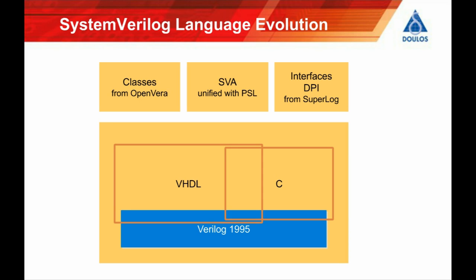It also incorporates classes taken from Openvera. It incorporates assertions and assertions have a lot in common with PSL. In fact, at one stage in its history, Accelera, who are the organisation who controls System Verilog, undertook an exercise to unify the semantics of System Verilog assertions or SVA with those of PSL. System Verilog also was inspired by many features of the Superlog language, in particular interfaces and DPI or the direct procedural interface. So all in all, System Verilog is quite a large language and it's sometimes described as effectively being several languages combined into one.